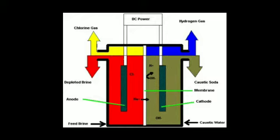The yellow color arrow shows the liberation of chlorine gas, and the blue color arrow shows the liberation of hydrogen gas. Near the anode, chlorine gas is liberated, and near the cathode, hydrogen gas is liberated. Caustic soda — that is sodium hydroxide — is also formed near the cathode.